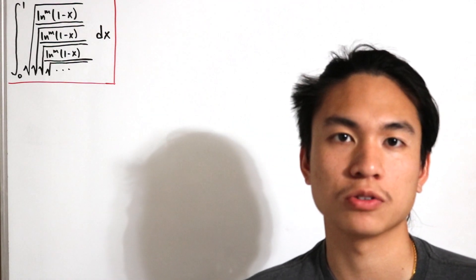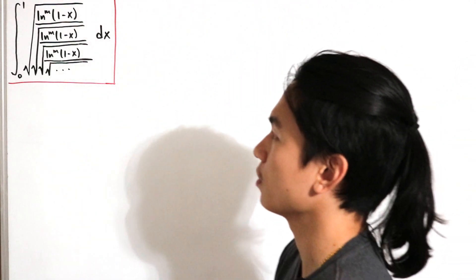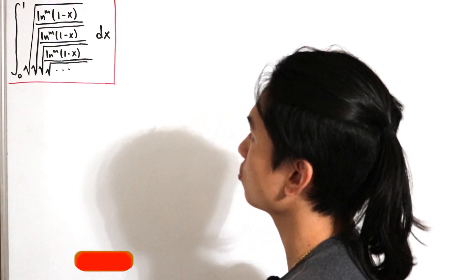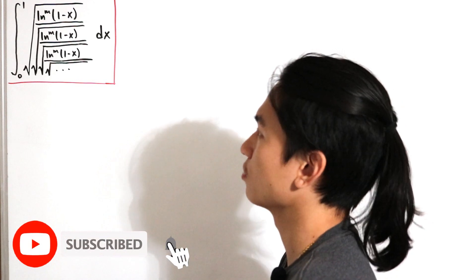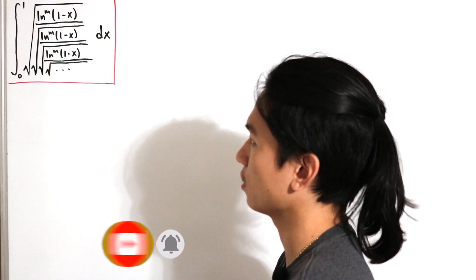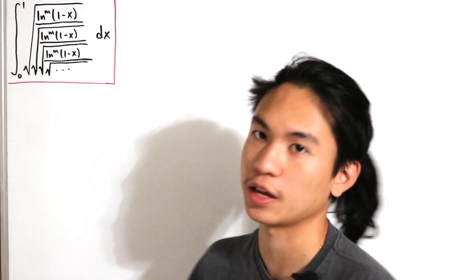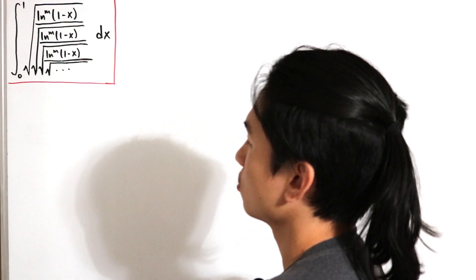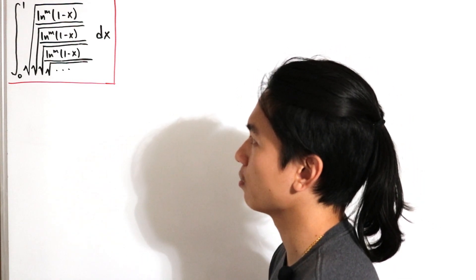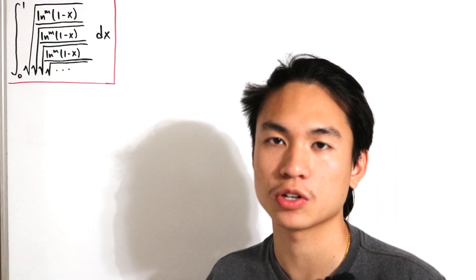Welcome back to another video. In today's video we have the following integral — this time it's with nested integrals. We have the square root of ln^m of (1 minus x) divided by the square root of ln^m of (1 minus x), and so on — it's nested. The method we're going to use is very similar to what I did with continued fractions a couple videos ago.